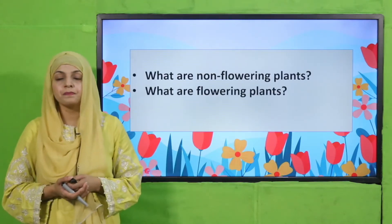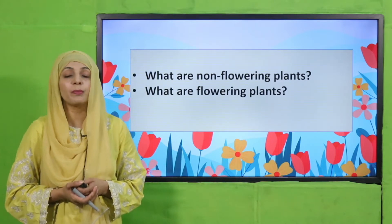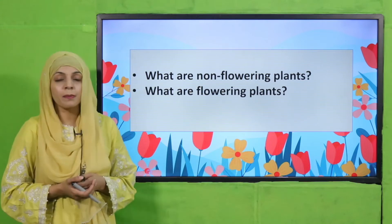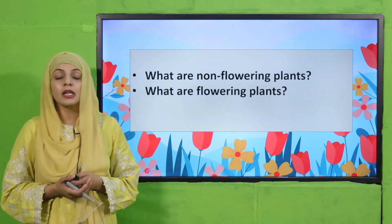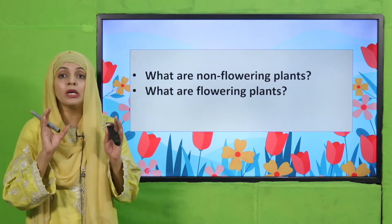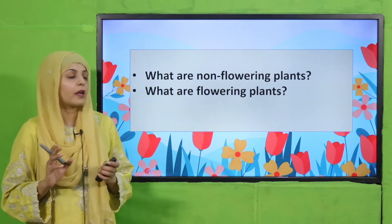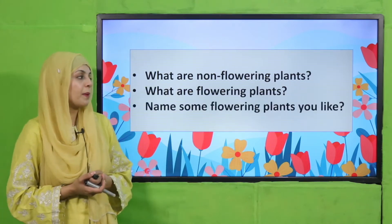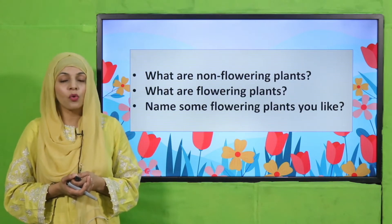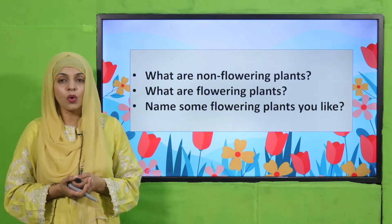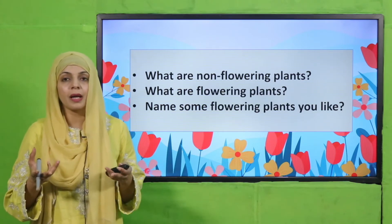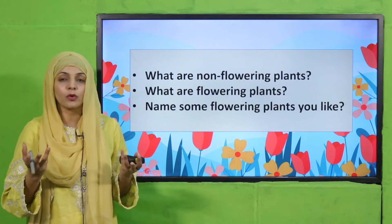Now, pre-reading questions: What are non-flowering plants? Aise paudhe jinn par phool nahi lagte, unko hum non-flowering kehte hain. What are flowering plants? Such plants which have flowers on them — jinn par phool lagte hain — those are called flowering plants. Name some flowering plants you like: rose plant, marigold, jasmine — these are some very common flowering plants.